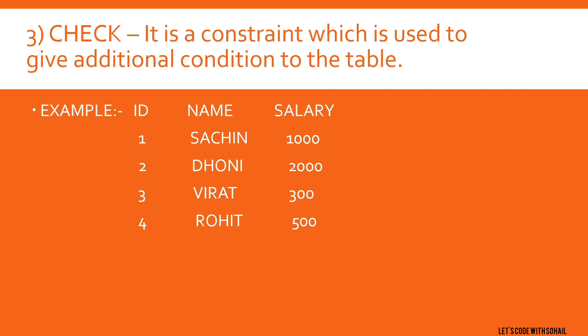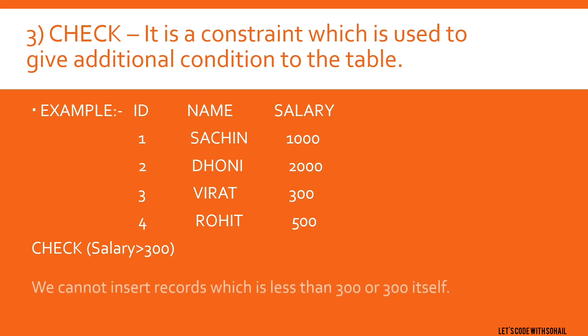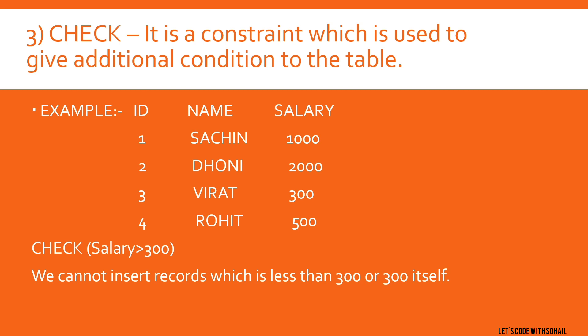This table has an id, name, and salary. Now we will give a condition to this table — for example, check salary greater than 300. This means we need only those records whose salary is above 300. We cannot insert a record whose salary is less than 300 or equal to 300.